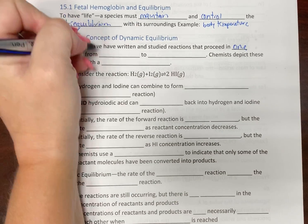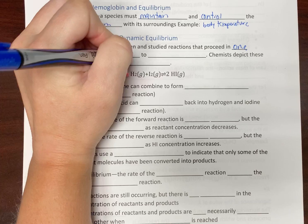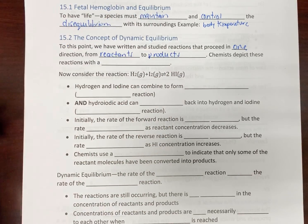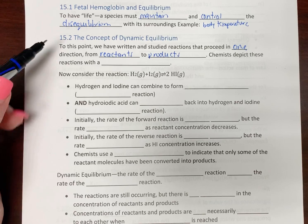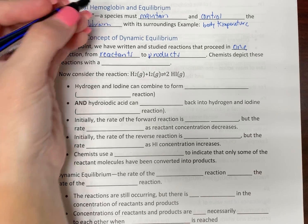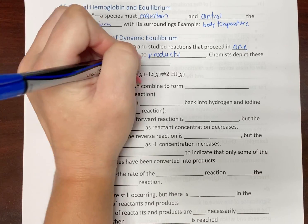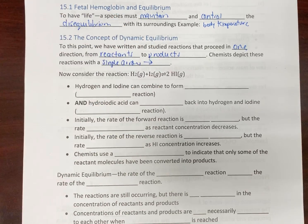When we do that, we depict these reactions using a single arrow, a single arrow that goes from left to right. So any equation that you have seen uses this.